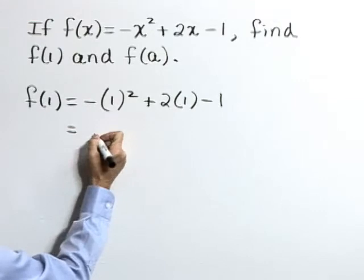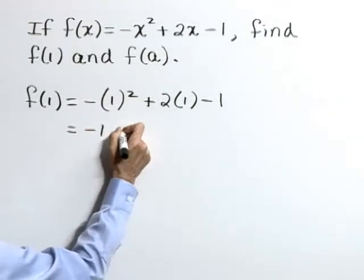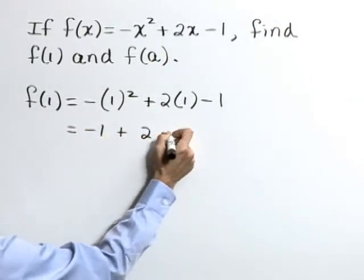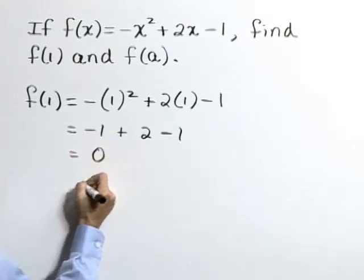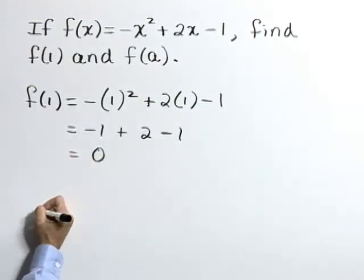Here we have the negative of 1 squared, or negative 1, plus 2 and minus 1. That sums to 0. Therefore, f of 1 is equal to 0.